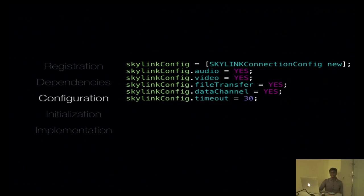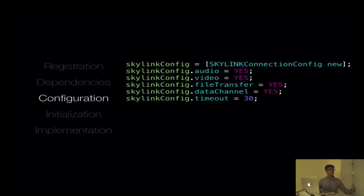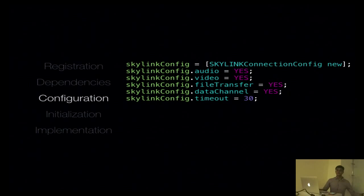This is where you set up the Skylink configuration itself. You can choose to enable audio, video, file transfer, and data channel. At this point, it's good to assess what your app actually needs. So let's say my app is an audio/video communication tool, but I don't need file transfer — I can just set file transfer to no. By the way, I'll be going through the Objective-C code, but we support both Objective-C and Swift. If you need the Swift version, you can just look it up on our website — I'll give the link later.